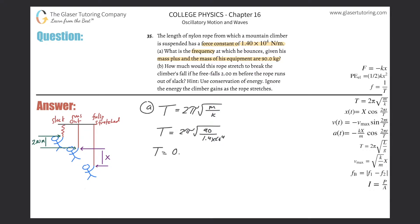We get a value of about 0.504 seconds. Now to find the frequency, I know that frequency is simply the inverse of the period. So 1 over 0.504 works out to be about 1.99 hertz. That's the frequency.